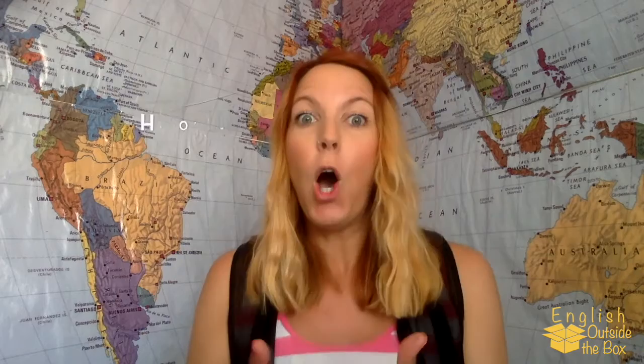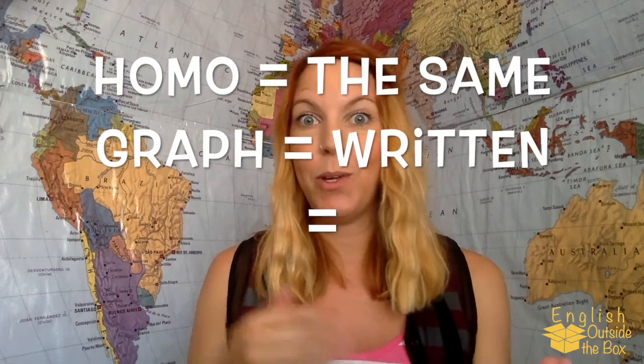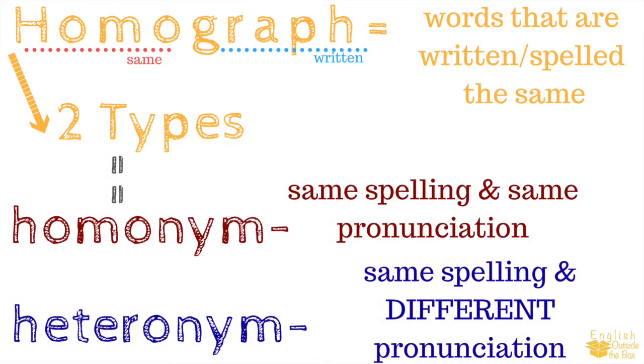Hetero-what? Let's have a quick review of some important terminology. Heterophones and heteronyms are an example of a homograph. A homograph is a word that's written the same — homo means same, graph means written. A homograph is always written the same; however, it can have different pronunciation — that's a heteronym — or it can have the same pronunciation — that's a homonym. In case you're a visual learner, take a quick look at this picture here.